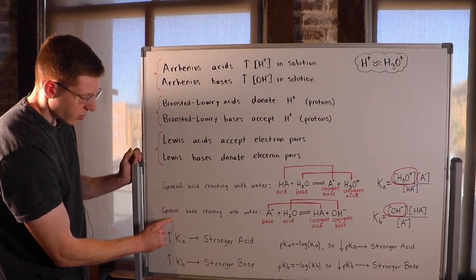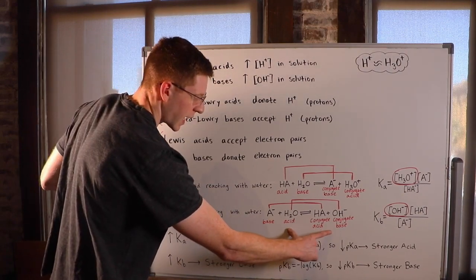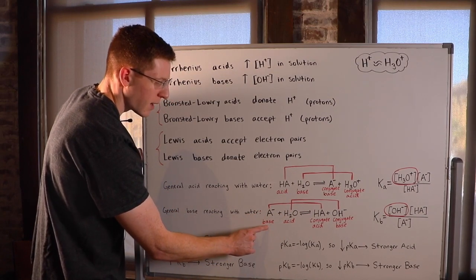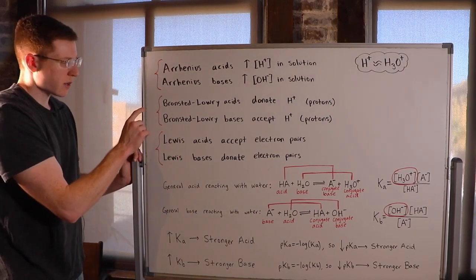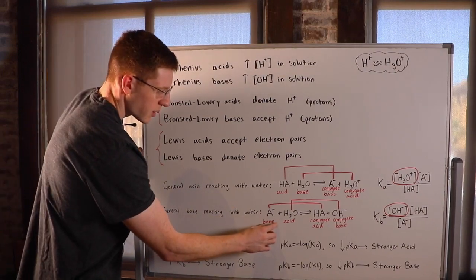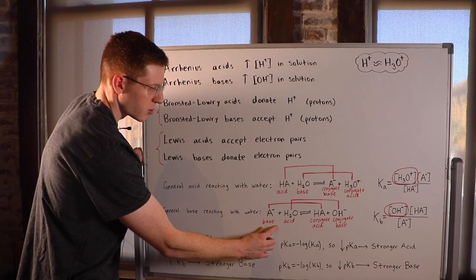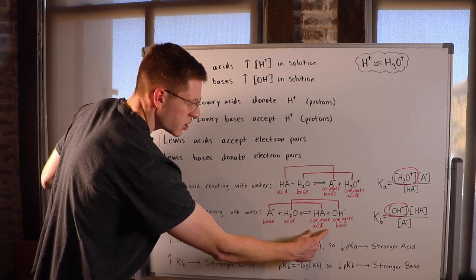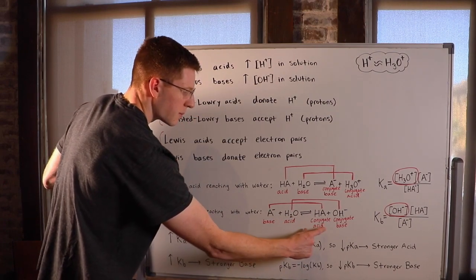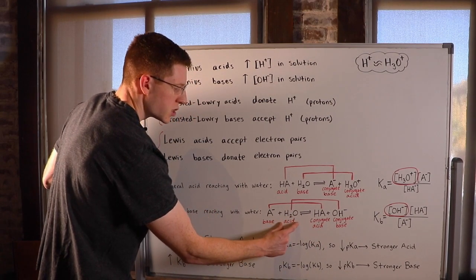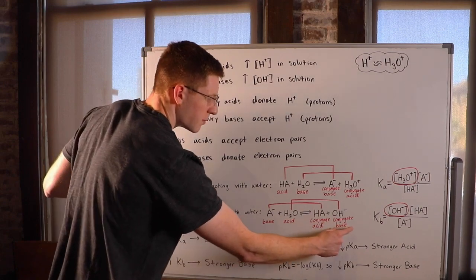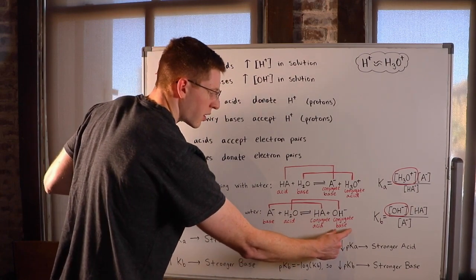Down here, I have the general base reacting with water. This is the general reaction for a base reacting with water. Here, notice water is now acting as an acid because A- is my base. Again, think about this reaction in terms of the Bronsted-Lowry definition. We say a base is going to accept a proton. So A- turned into HA. It accepted an H, a proton, and it became a conjugate acid. Bases become conjugate acids. H2O started out as an acid, and we know acids donate protons, so it lost an H and became OH-, the acid turned into its conjugate base.